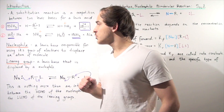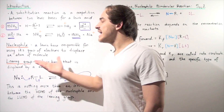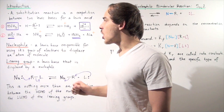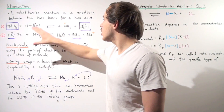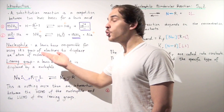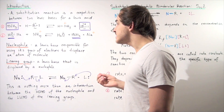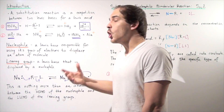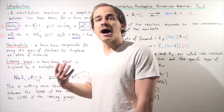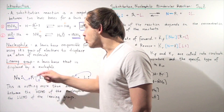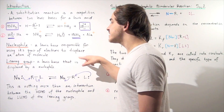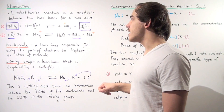Now, whenever we talk about substitution reactions and specifically the SN2 reaction, there are two terms we have to be familiar with: nucleophile and leaving group. A nucleophile is a Lewis base responsible for using its lone pair of electrons to displace an atom or a molecule, while a leaving group is the molecule or atom being displaced — it's the Lewis base that is displaced by the nucleophile.